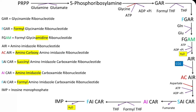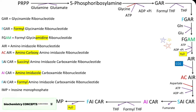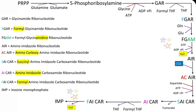In the next reaction, Formyl Glycinamide Ribonucleotide (FGAM) is converted to AIR. AIR means Aminoimidazole Ribonucleotide. This is the fifth reaction, and the fifth and tenth reactions are ring closure reactions where cyclization takes place. So the enzyme here is Cyclase.